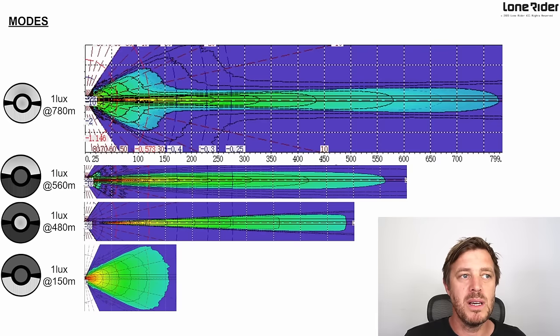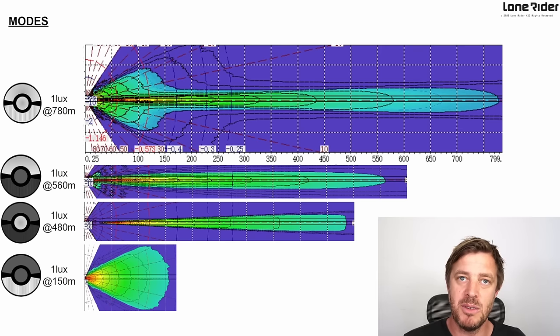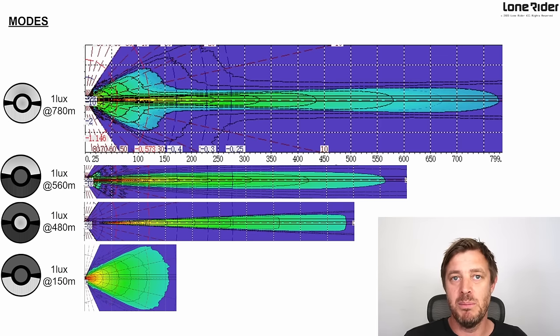When we look at all the different modes together, let's start from the top. Combined everything - all lights are on, the driving light, high beam, spot, area light - we're getting one lux at 780 meters. Essentially what that means is you can read a book at 780 meters with this light. With the high beam you're getting one lux at 560 meters, so you can read a book at 560 meters on high beam away from the light. Then you've got one lux for the spot at 480 meters. And for the area lighting at 150 meters you've got one lux. Very happy with those results.